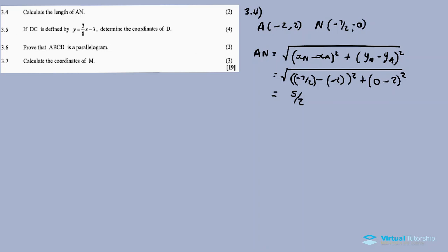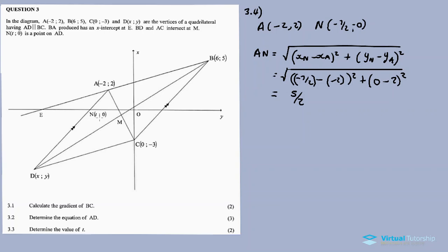3.5: If DC is defined by the equation y = (3/8)x − 3, determine the coordinates of D. Lines AD and DC intersect at point D. By solving the equations of AD and DC simultaneously, we can find the coordinates of D.